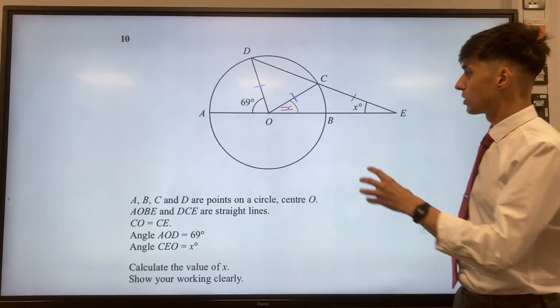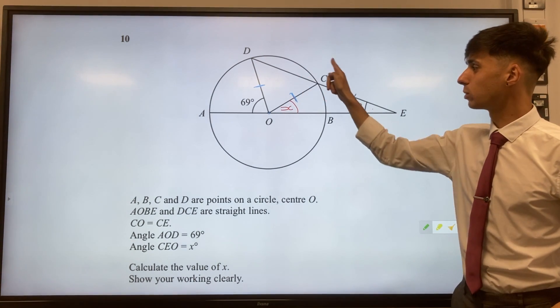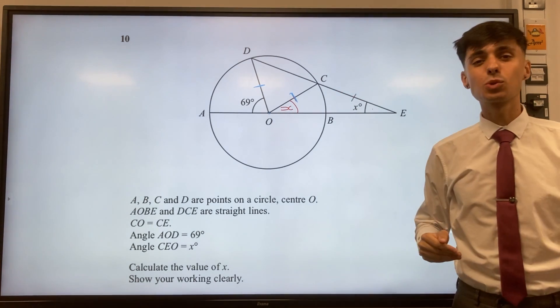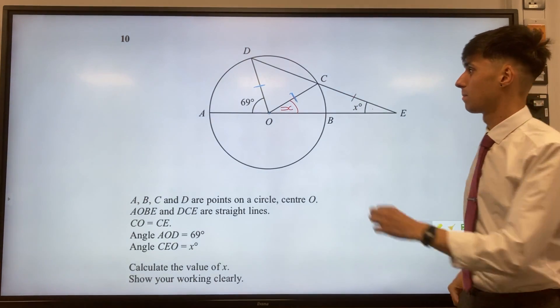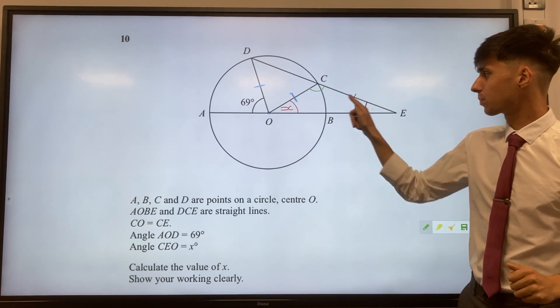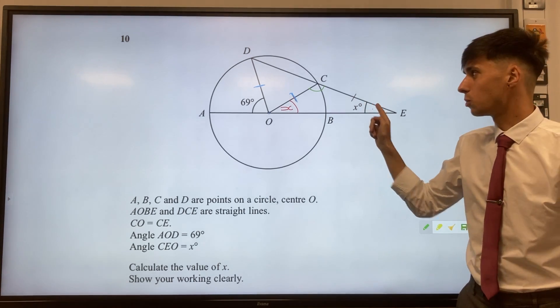Well our next thought should be to try and find maybe some missing angles around here, and if you think back to triangles, well angles in a triangle add up to 180. So if we have two angles of x, what must the third angle be?